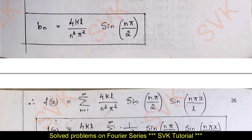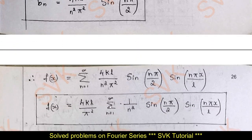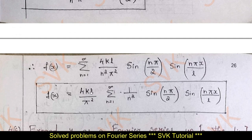Substituting bₙ back into the expression for f(x), we get f(x) = (4kl/π²) Σ (1/n²) sin(nπ/2) sin(nπx/l), which is the required solution for the given half-range Fourier sine series.